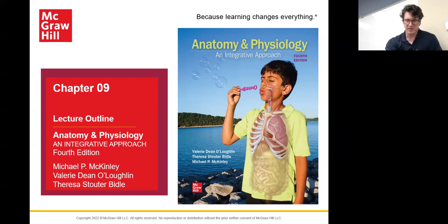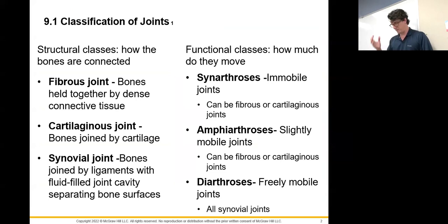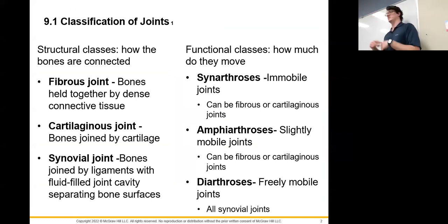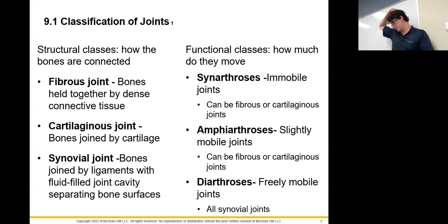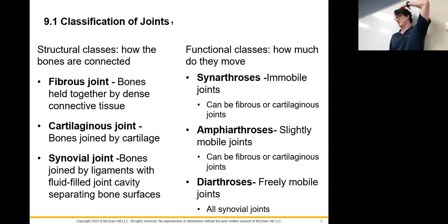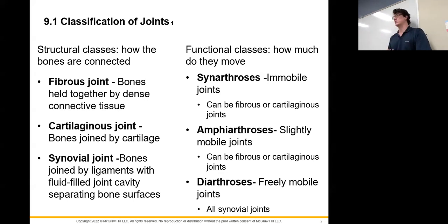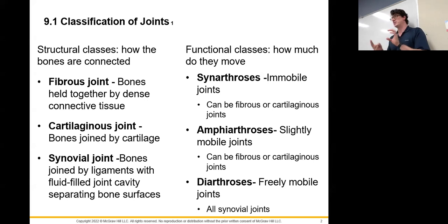When people think about joints, they're often only thinking about joints that can move — their shoulders, fingers, elbows. However, there are other types of joints. Those sutures we looked at in the skull — what was the name of the suture separating the left and right parietal bones? The sagittal suture. That is a connection point between bones, which is the definition of a joint. That joint is different from the shoulder in both structure and function.